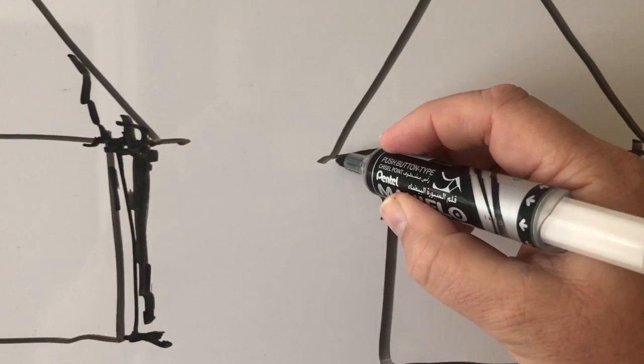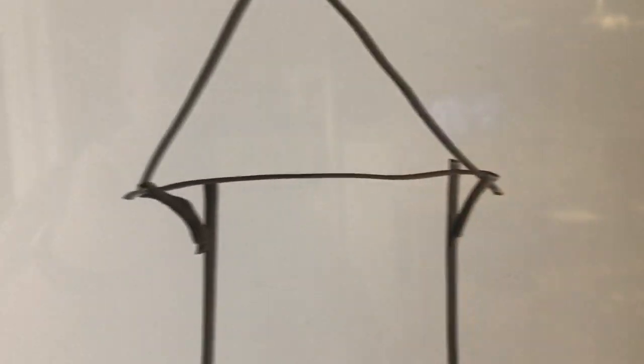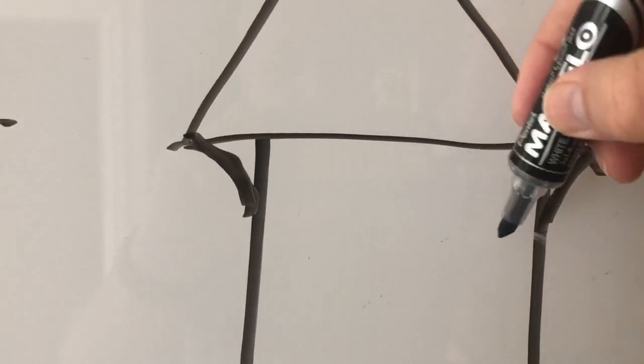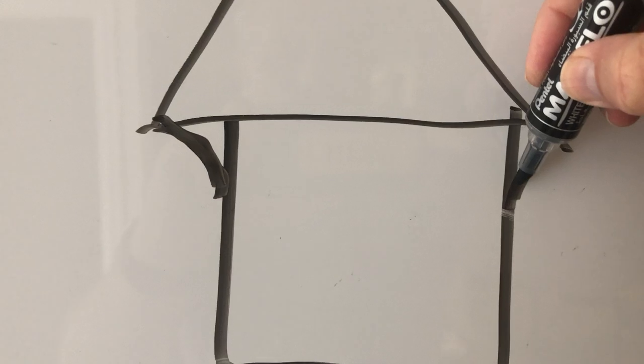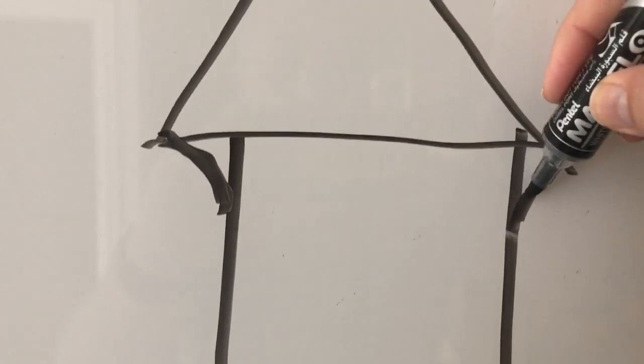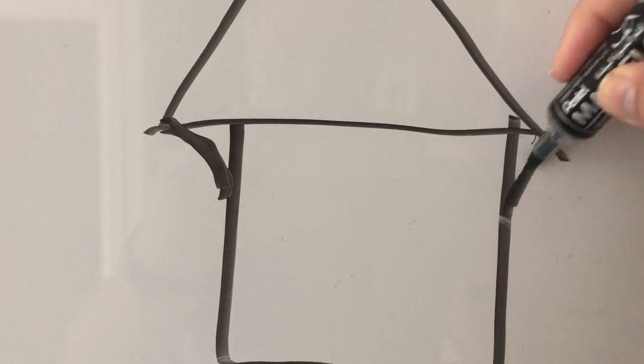So that when it's printing, printing, printing, and then it gets to this, it can stretch out a little bit because it's not hanging out over nothing, so it can print out a little bit. Then the next layer, it's gonna add a little bit more, then a little bit more, then a little bit more, and that's how you achieve things like overhangs.